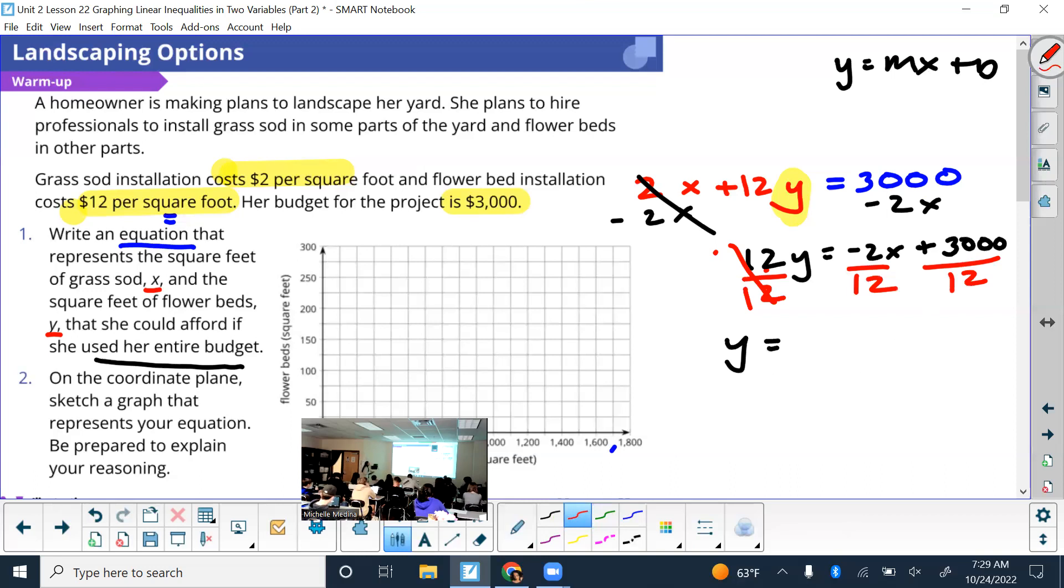All right. Now the negative 2 over 12, can that be simplified more? What does it simplify to? Not negative 6, so that would be 12 divided by negative 2. Did someone say it? Negative 1 over 6. Common mistake. It's really like to imagine that the bigger numbers aren't top, so don't make that mistake. It's simplified. And then 3,000 divided by 12?